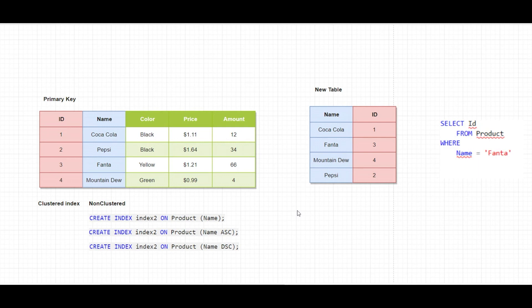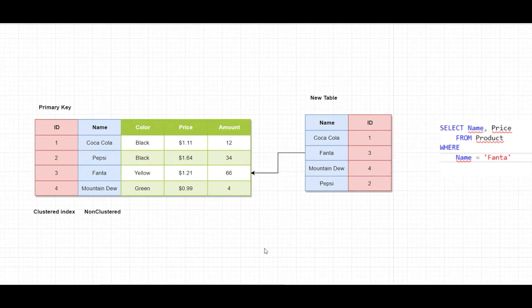Under the hood, SQL Server will create another table — you will not be able to see this table. It will contain the non-clustered index and the primary key. When you create a primary key on a specific table, it will automatically create a clustered index on it. If I run the query on the right side, the results will come from the index directly and not from the original table.